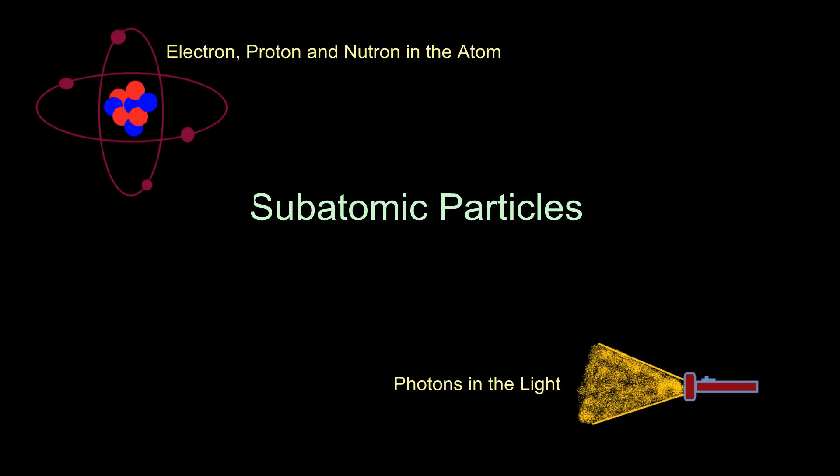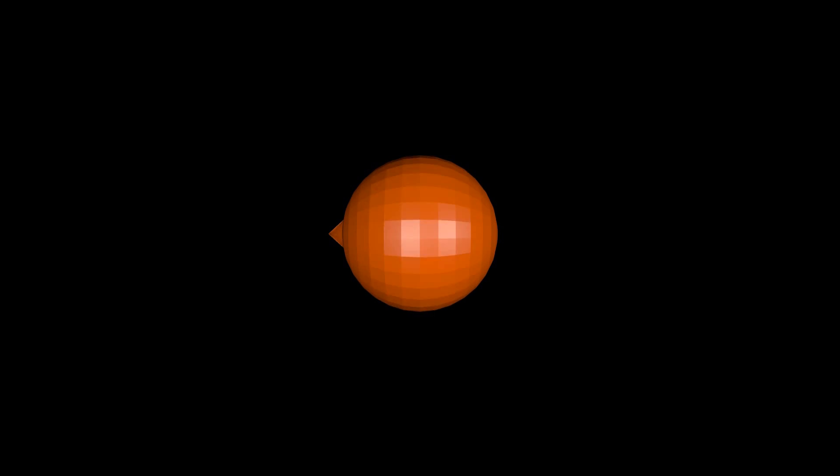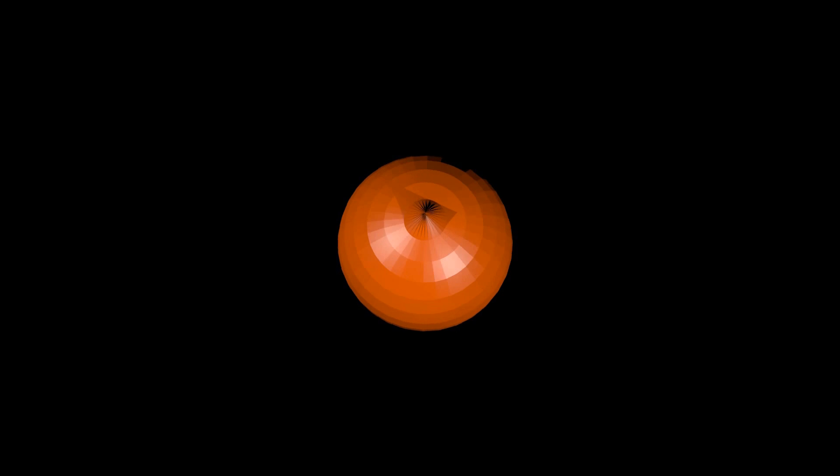Subatomic particles are electron, proton, and neutron in an atom, and photons in light. Electrons have the property of spin, which refers to the direction pointing to its rotation. The spin may be up, down, left, right, or any other direction.